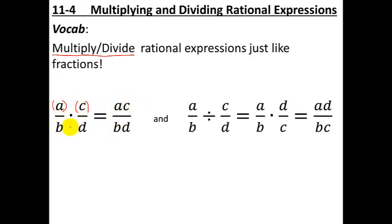So multiplication, straight across the top, straight across the bottom. Now when you're dividing, when you divide by a fraction, you multiply by the reciprocal. So you just take this second fraction and you flip it upside down, so the C and the D switch places, and then you multiply straight across the top.